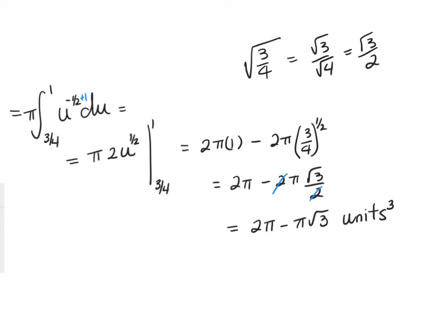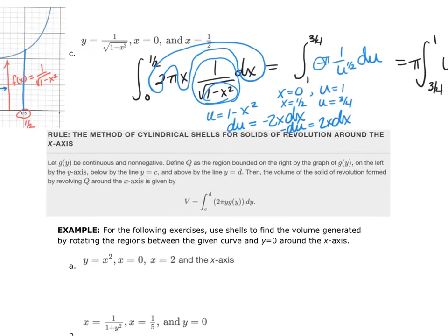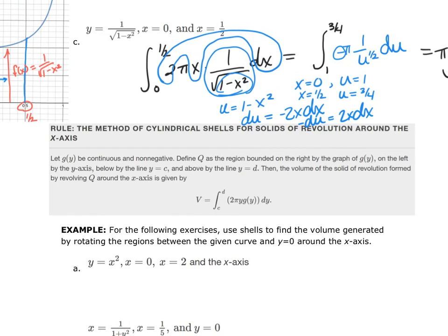Now let's look at when we integrate with respect to y, because we're revolving around the x-axis. When integrating with respect to y for a revolution around the x-axis, the formula is still circumference times height: 2πr where r is now y, multiplied by the height expressed as a function of y.